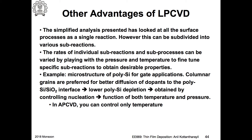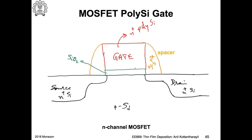So if you use the polysilicon gate for making transistors, you need to fill up the transistors — meaning you need to dope the polysilicon. Undoped polysilicon is nearly an insulator or has very high resistance. So I cannot use those kinds of devices in high-frequency applications because the gate will actually have high resistance.